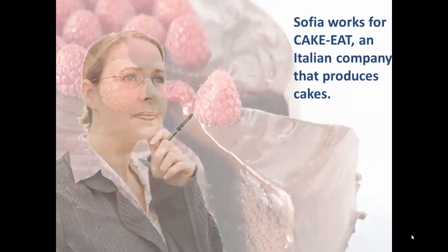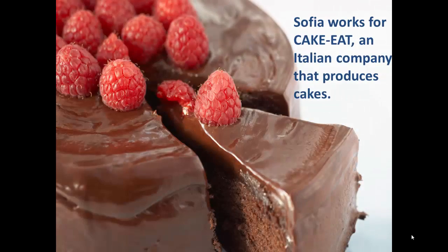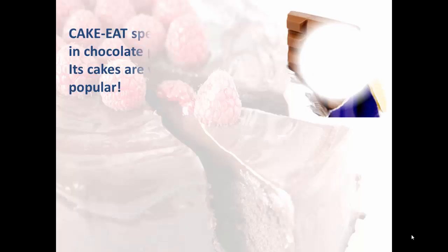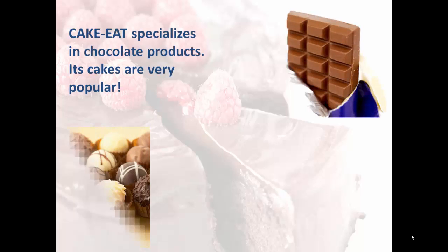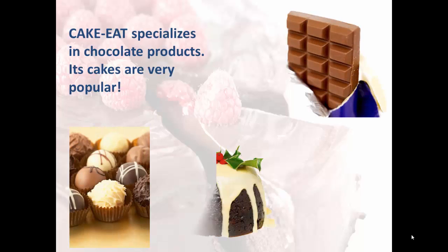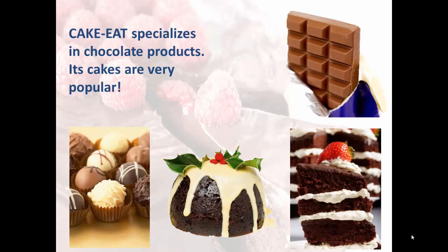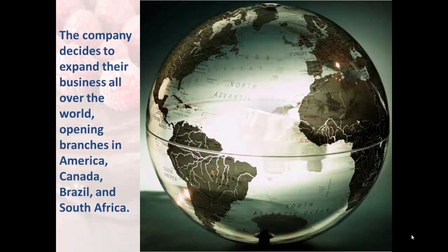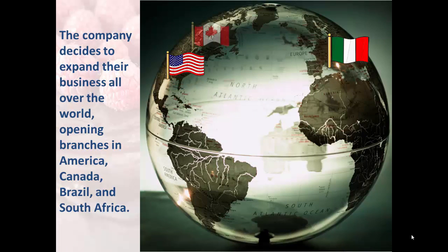Sophia works for CakeEat, an Italian company that produces cakes. CakeEat specializes in chocolate products, and its cakes are very popular. The company decides to expand their business all over the world, opening branches in America, Canada, Brazil, and South Africa.